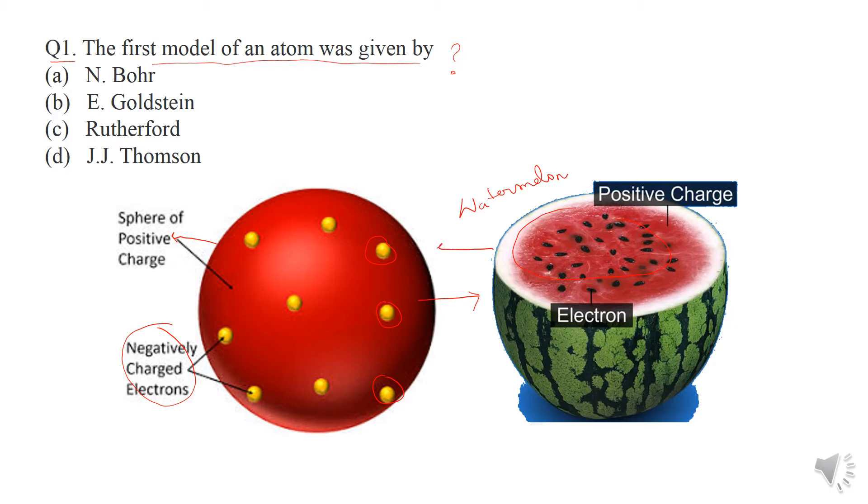the first model of atom had electrons spread throughout the positively charged sphere. So this model of atom was given by J.J. Thomson, so the answer of this question is D.